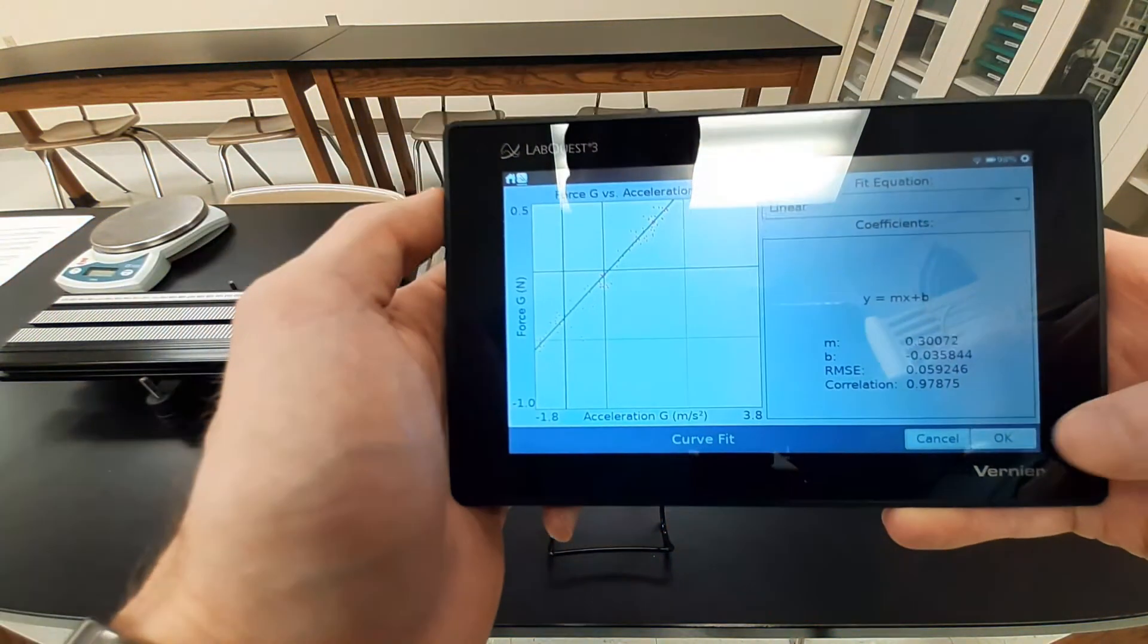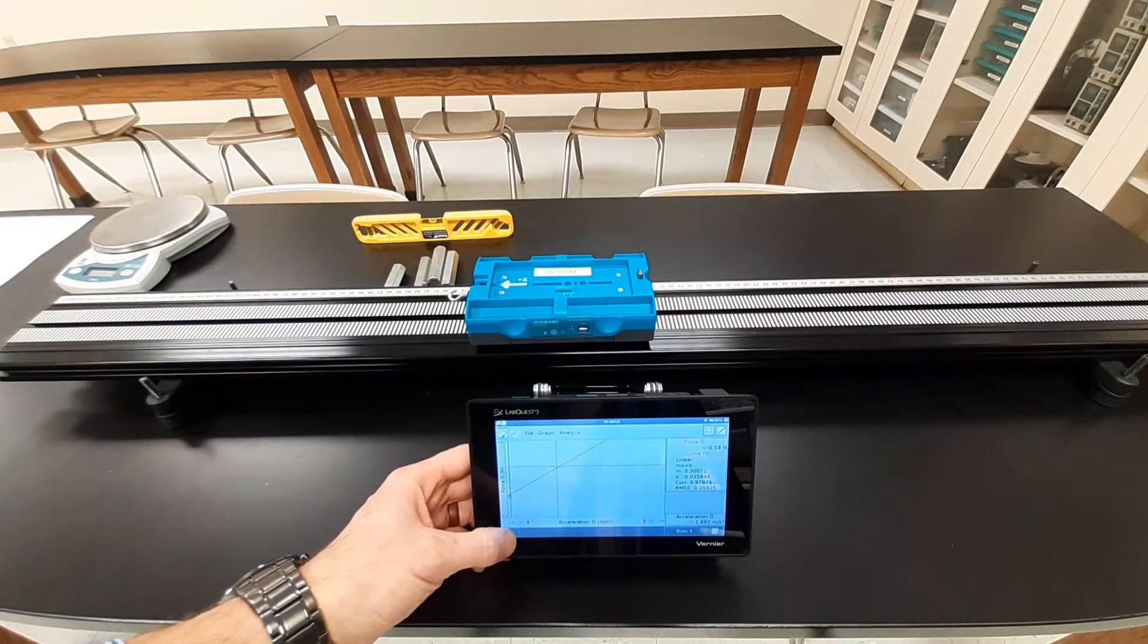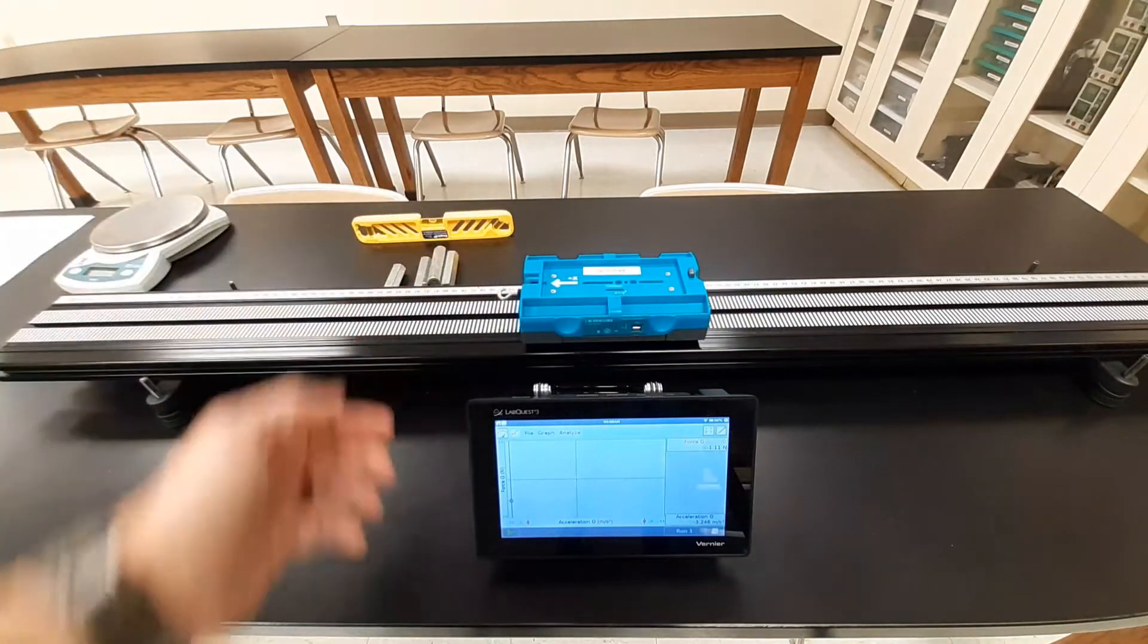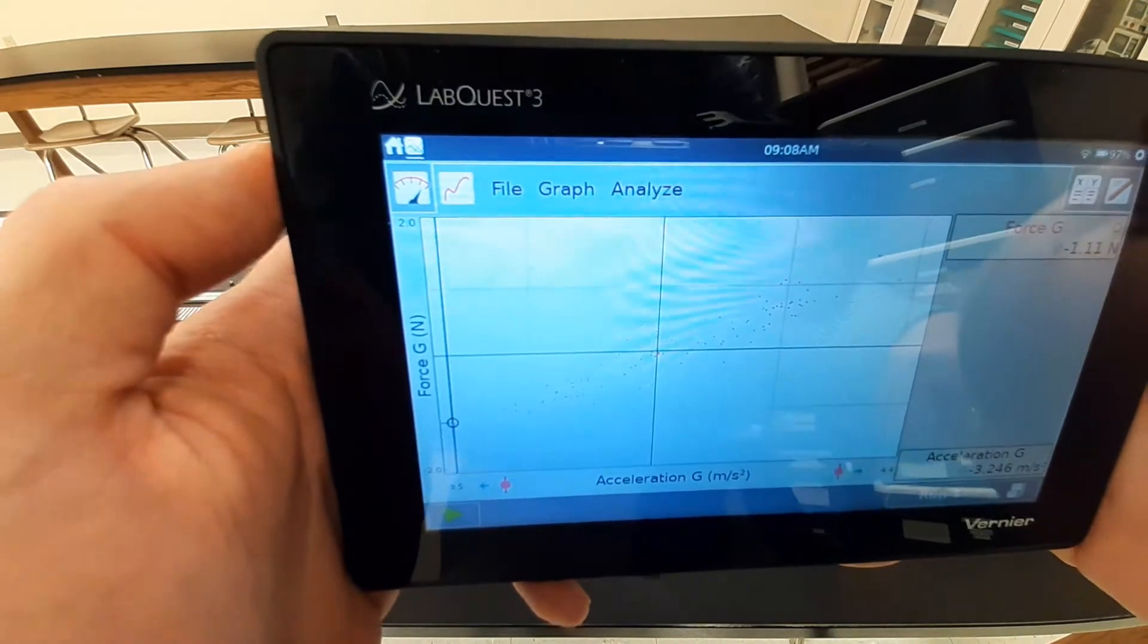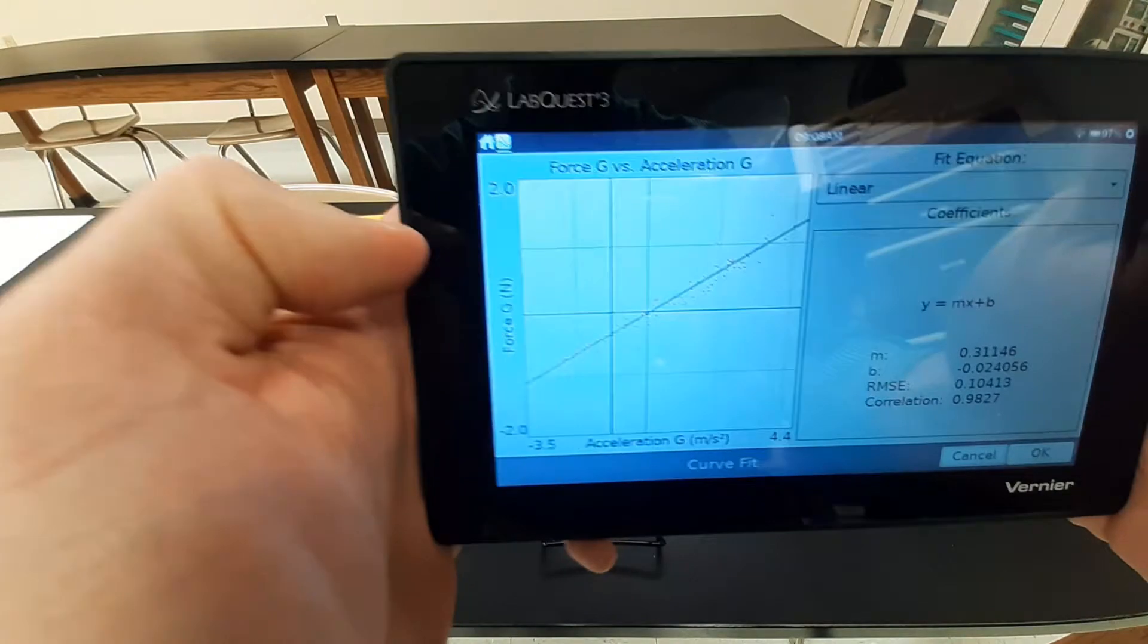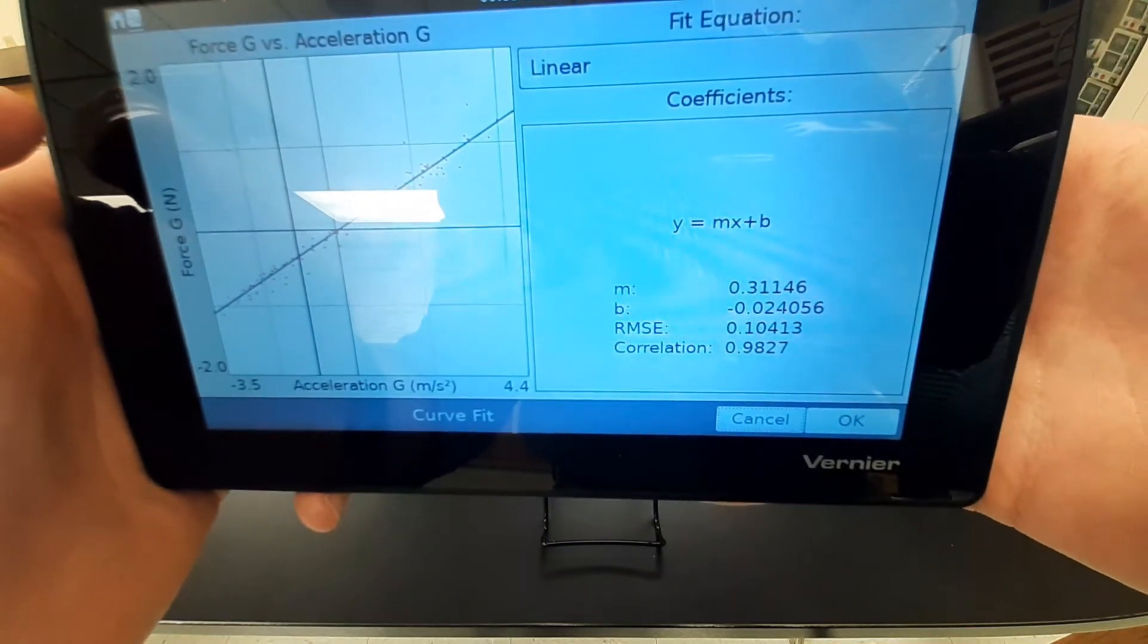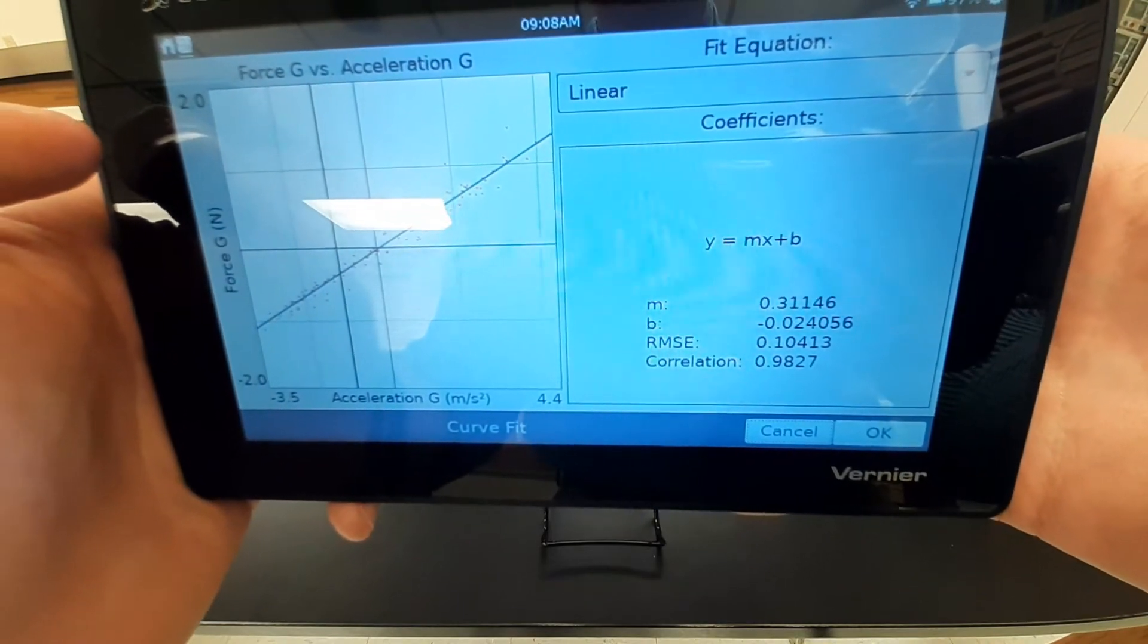And now we're going straight into trial number three. So I'm going to start this data collection. I'm going to apply some various forces to my car. And once it stops itself again, we want to analyze this data. So curve fit, force. So again, there's your slope and your y-intercept. Slope's 0.3114, and y-intercept negative 0.0241.